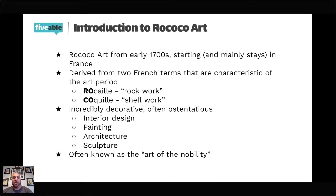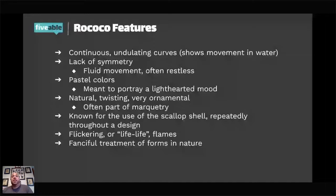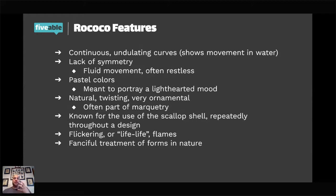Features of Rococo art include undulating curves, which basically means it looks like waves and water. There's no symmetry — that was a big thing in Renaissance art, but Rococo says no, we want things to be fluid and loose, often looking like people can't sit still. The colors of Rococo art are also one way you can tell it's for the very rich. Certain colors are incredibly expensive — blues and purples don't occur commonly in nature. When you start using pastels, you've upped the cost of a painting significantly, which is why this is the art of the nobility.